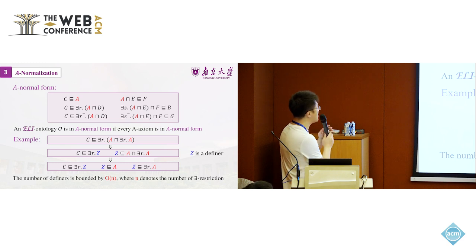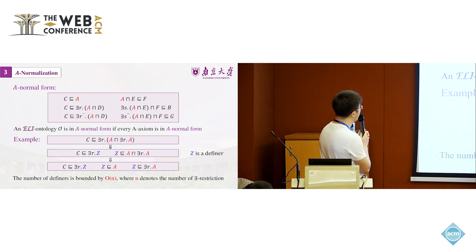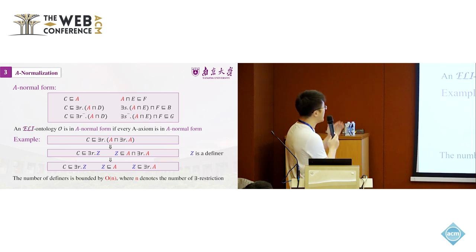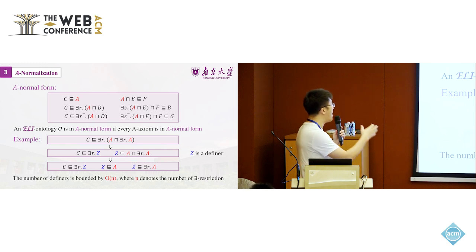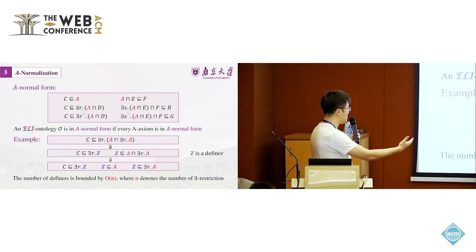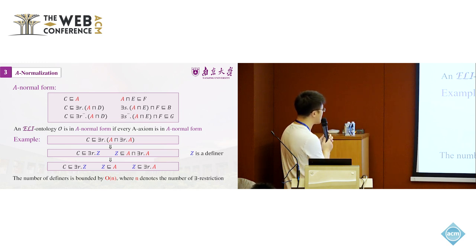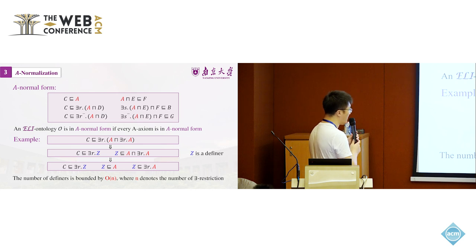What is X normalization? Here we use an example where we want to forget the concept name A from the original ontology. We have specialized fixed forms of normal form. We say ELI ontology O is in A normal form if every axiom is in A normal form. This is an example of how we introduce definer symbols to make the original structure of the ontology into this structure where we can call this structure a normal form. We have to introduce new concept names from outside. The number of definers we introduce is a key element in deciding the complexity of our algorithm.